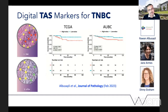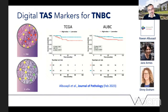We showed cross-validation where the same markers trained on TCGA worked on the Australian breast cancer cohort and vice versa. This shows that there is something in the tumor-associated stroma — it's not just about tumor, it's about the immune response. The stromal TILs are indicative of the immune response and can help stratify patients into low-risk and high-risk groups.